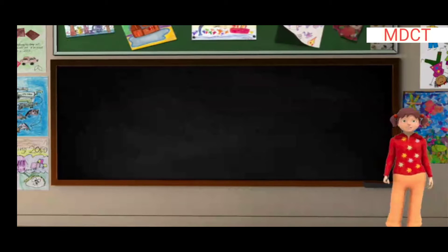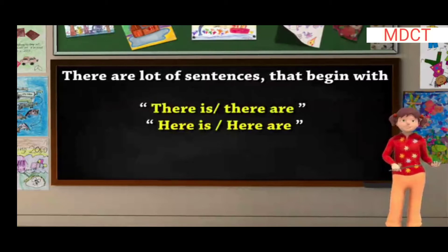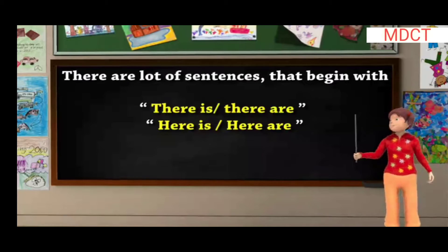Let us now learn about a very important rule. There are a lot of sentences that begin with there is or there are, here is or here are.